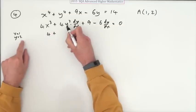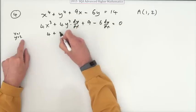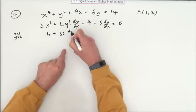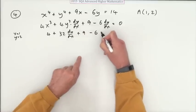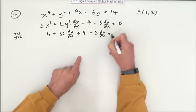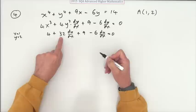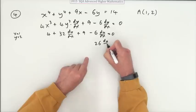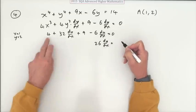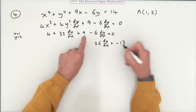Y cubed, 2 cubed is 8, so that's 32, and that's lots of dy/dx, plus a 9, minus a 6 dy/dx equals 0. Now just tidy up: 32 take away 6 means you've got 26 lots of dy/dx, and the 4 and the 9 makes a 13 to carry over as a negative 13.